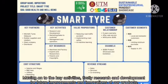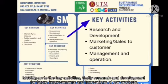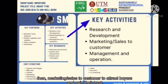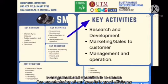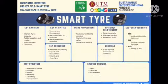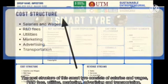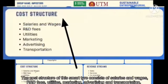Moving on to the key activities. Firstly, research and development for future improvement and innovations of our products. Then, marketing and sales to customers to attract buyers and gain their trust. Management and operation is to ensure the manufacturing of our tyres is in good efficiency. The core cost structure of this SmartTire consists of salaries and wages, office utilities, marketing, advertising, and transportation.